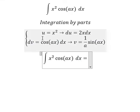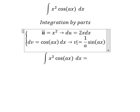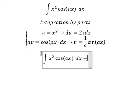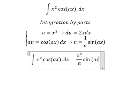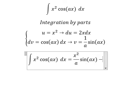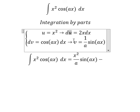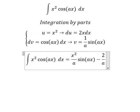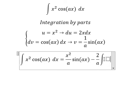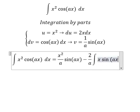So we have u multiplied by v. We have x squared over a sine ax minus the integral of v du. So we have 2 over a times the integration of x sine ax dx.